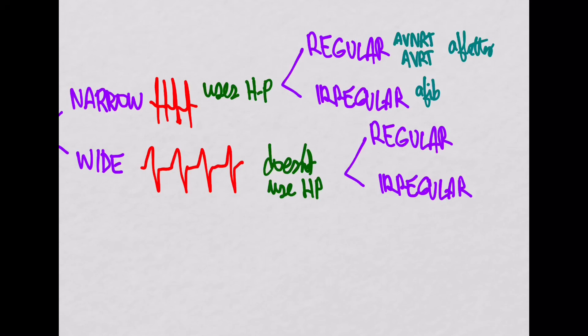The wide complex regular ones could be your AVRT that is antidromic, or it could be any kind of tachycardia with aberrancy. And what aberrancy means is there's a bundle branch block, so it's got a wide complex. It could also be ventricular tachycardia, but technically that is not a supraventricular tachycardia. The wide complex irregular ones could be ventricular arrhythmias. Again, it could be VTAC, it could be torsades, it could be polymorphic VTAC, or VFib, or it could be AFib plus aberrancy, such as a bundle branch block or WPW.